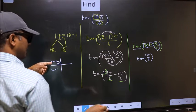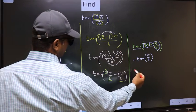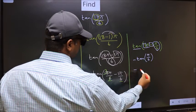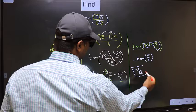And in the second quadrant, tan is negative. So we should put negative. So negative tan π by 6 is 1 by root 3. This is our answer.